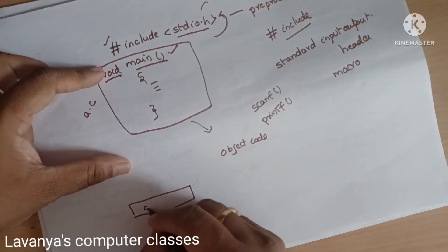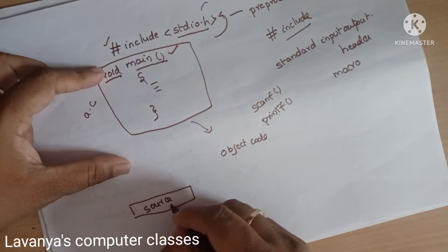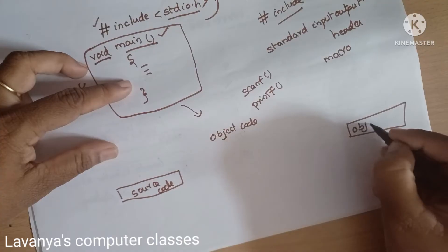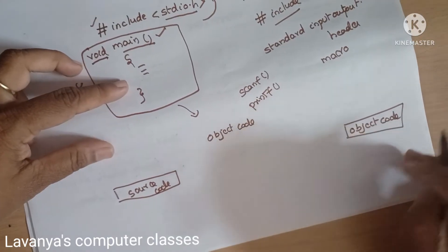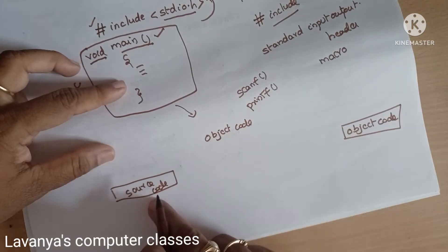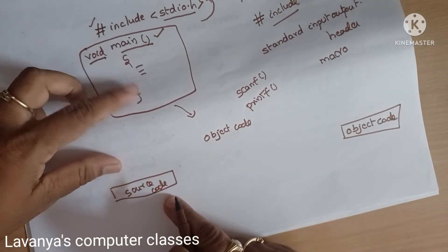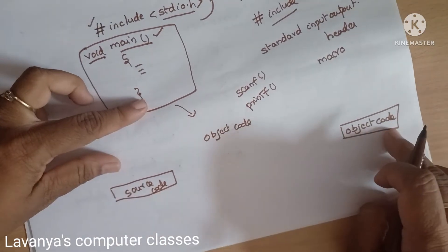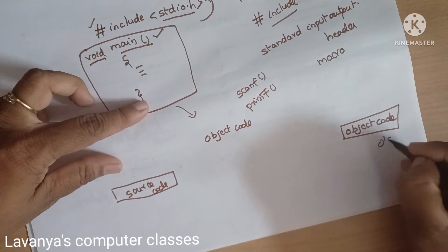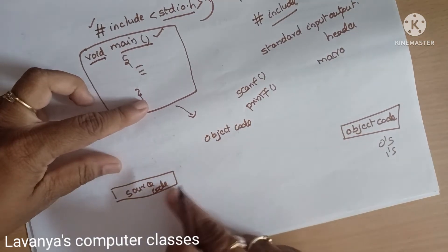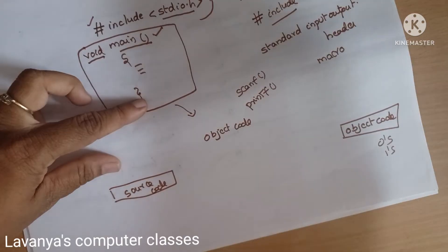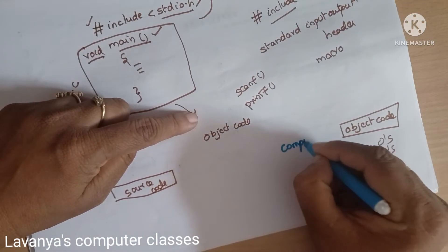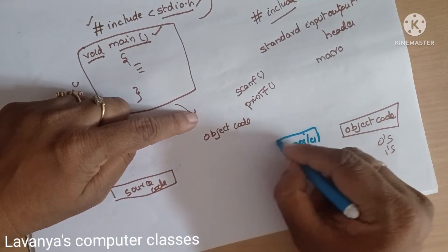Source code is converted into object code. Object code means the entire program is converted into machine language. Because the computer understands only machine-level language, not source code. Source code is for human-readable programs; object code is for machine-understandable language, containing zeros and ones. To convert source code to object code, we need a compiler.